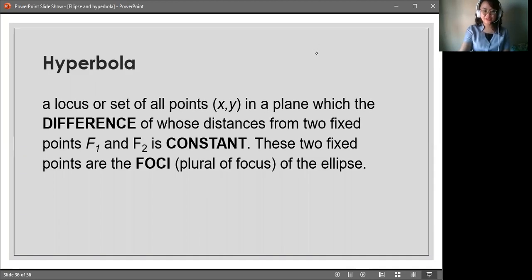Hyperbola is defined as the locus or a set of all points (x, y) in a plane, which the difference of two distances from two fixed points, f1 and f2, is a constant. These two fixed points are called the foci, plural of focus of the ellipse.